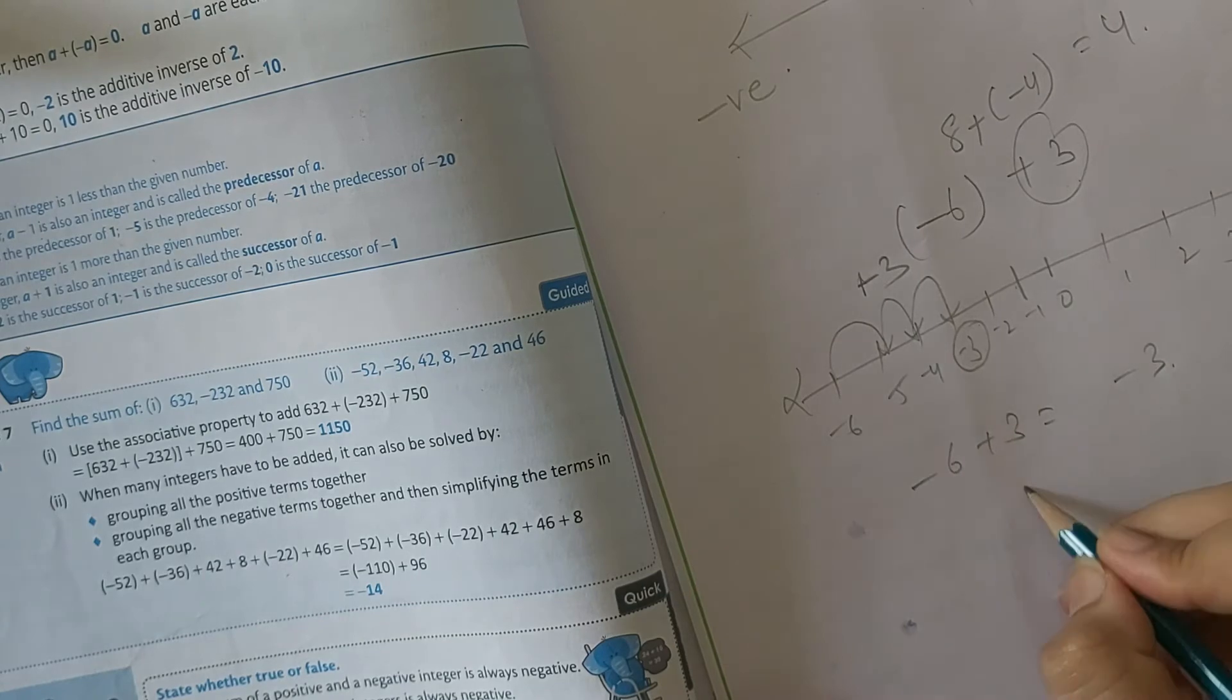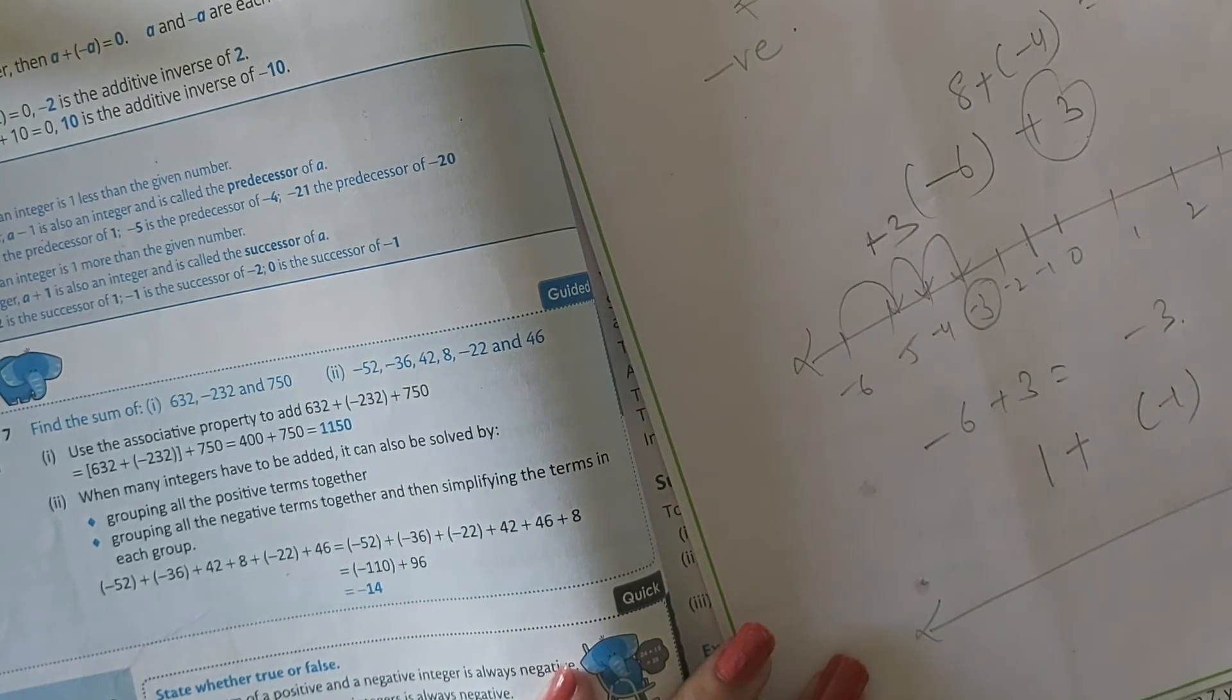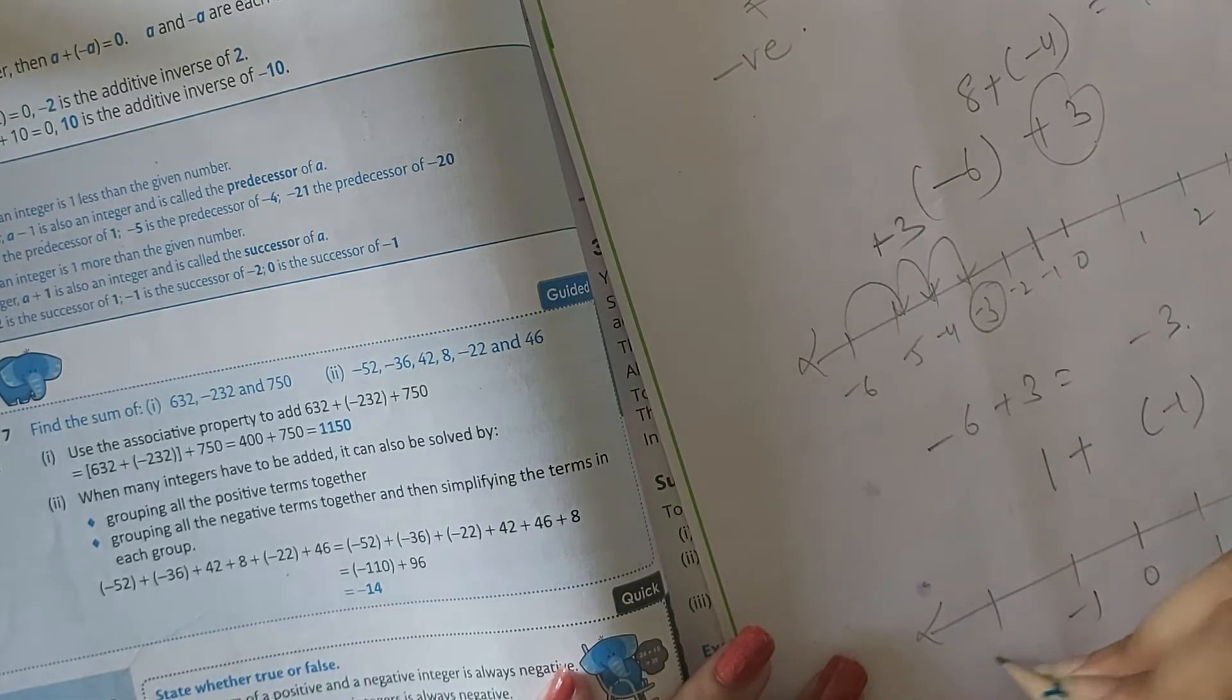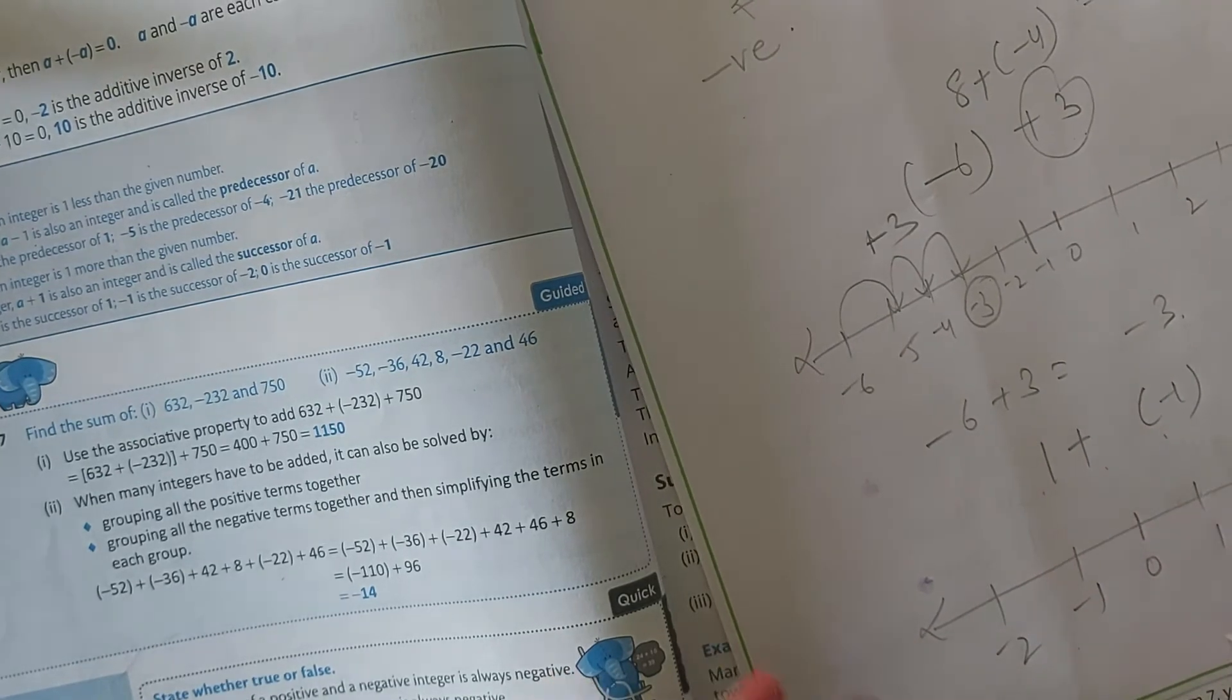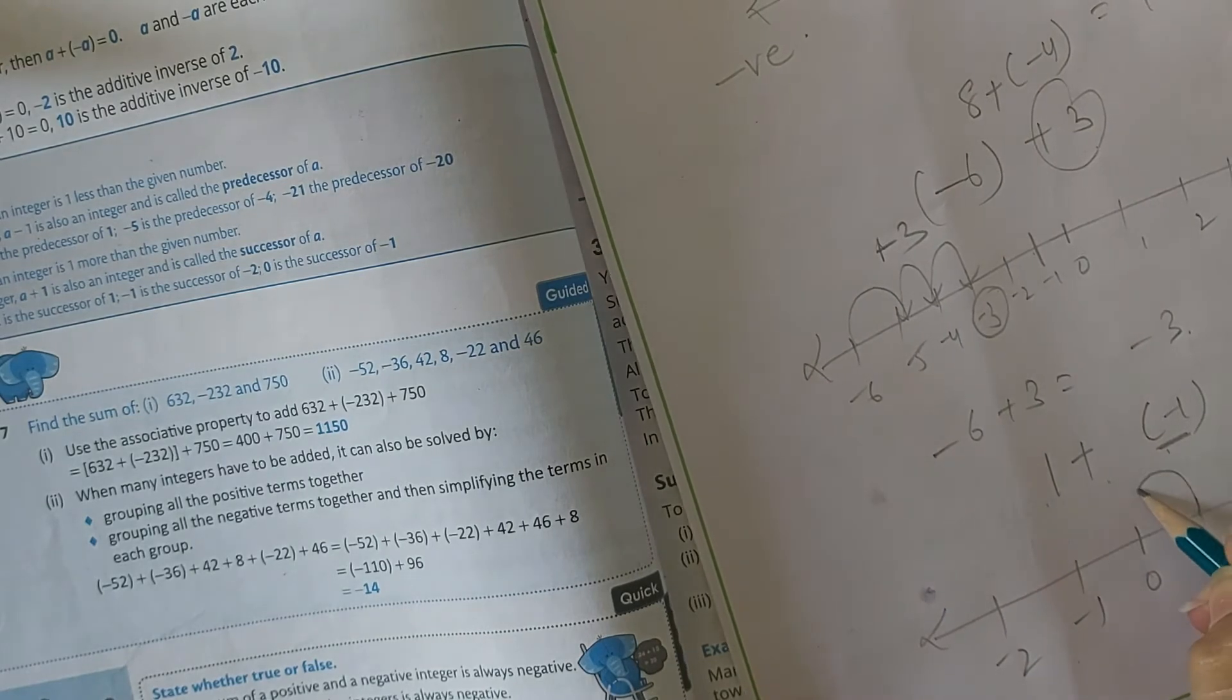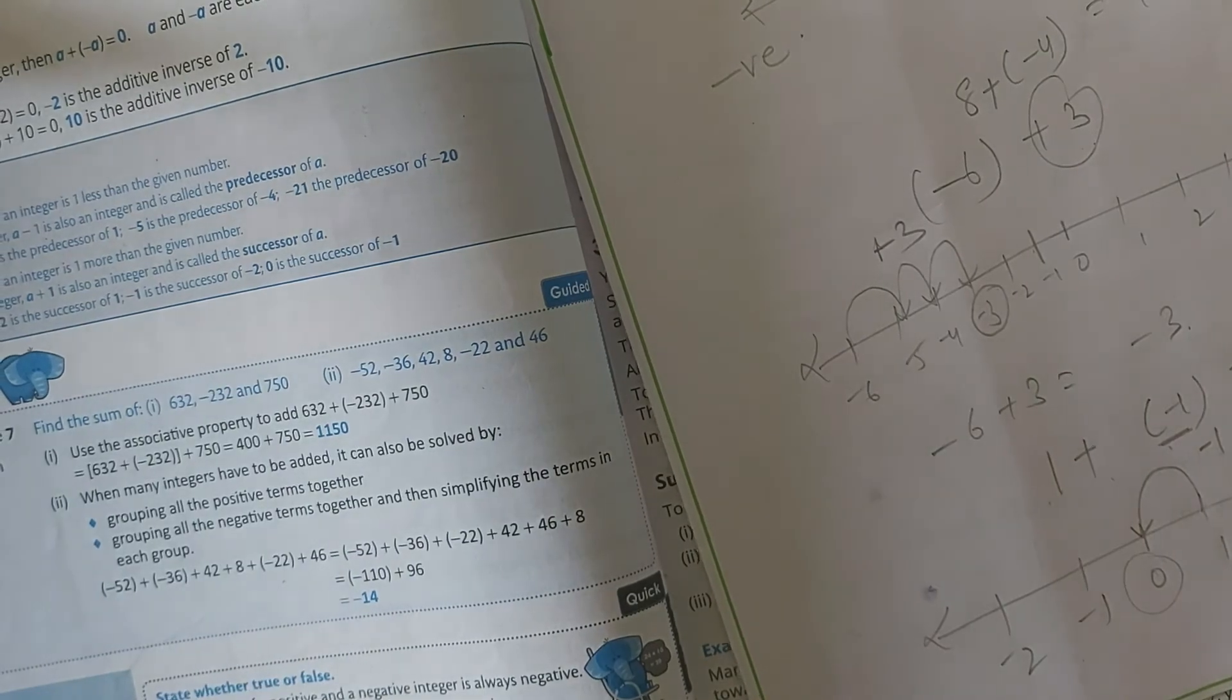Moving to next question: 1 plus minus 1. So draw a number line: 0, 1, minus 1, minus 2, 2. So that is 1 plus minus 1. 1 is here. When they ask to add a negative number, simply move to the left hand side. That is 0. So our answer is always 0.